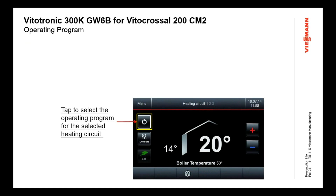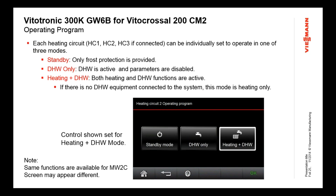Let's take a closer look at the system settings — the operating program settings. When you click that, you get a screen showing operation choices: standby mode, which is basically no heat and no domestic hot water (it just sits there unless frost protection kicks in to maintain a minimum water temperature); domestic only, which is a summertime mode when you don't need heat; and heating plus domestic hot water, which is the winter mode with domestic hot water.